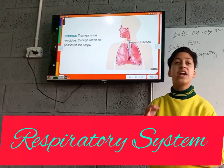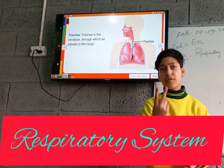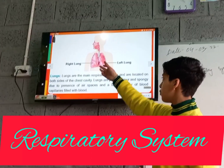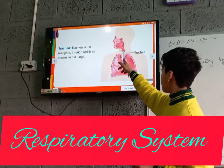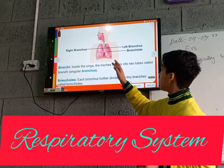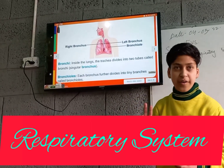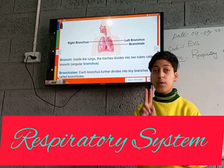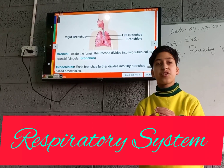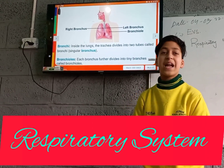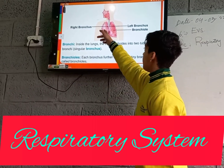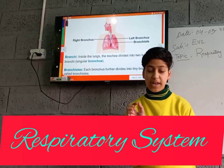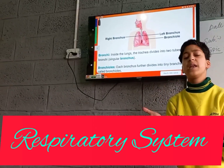The trachea is a thin tube and it gets divided into two parts called the bronchus — one bronchus for each lung. After that, each bronchus gets divided again into many smaller parts, which are known as bronchioles.